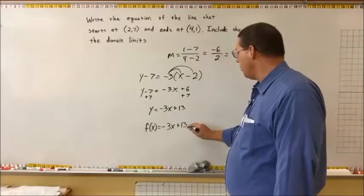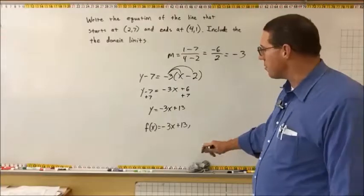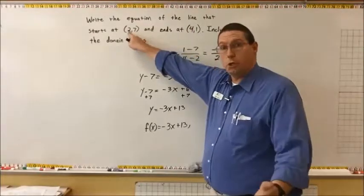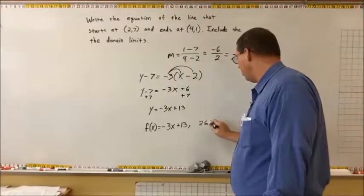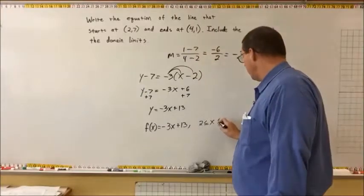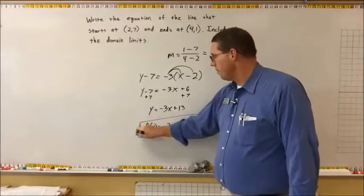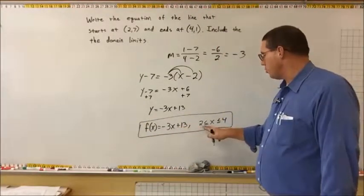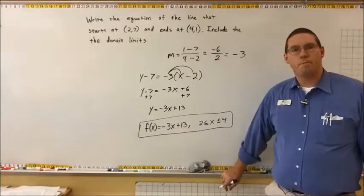Now we add the domain limits. This line starts at x equals 2 and ends at x equals 4, so x only goes from 2 to 4. We've identified the function of the line that starts at 2 and ends at 4, and this is the line that goes between those two points.